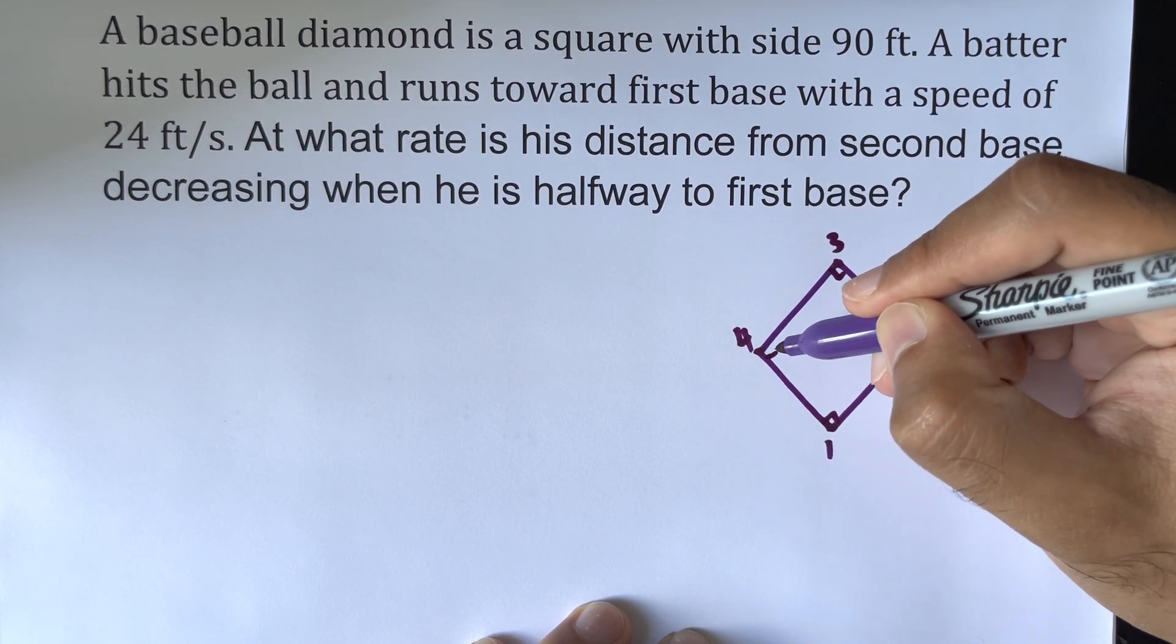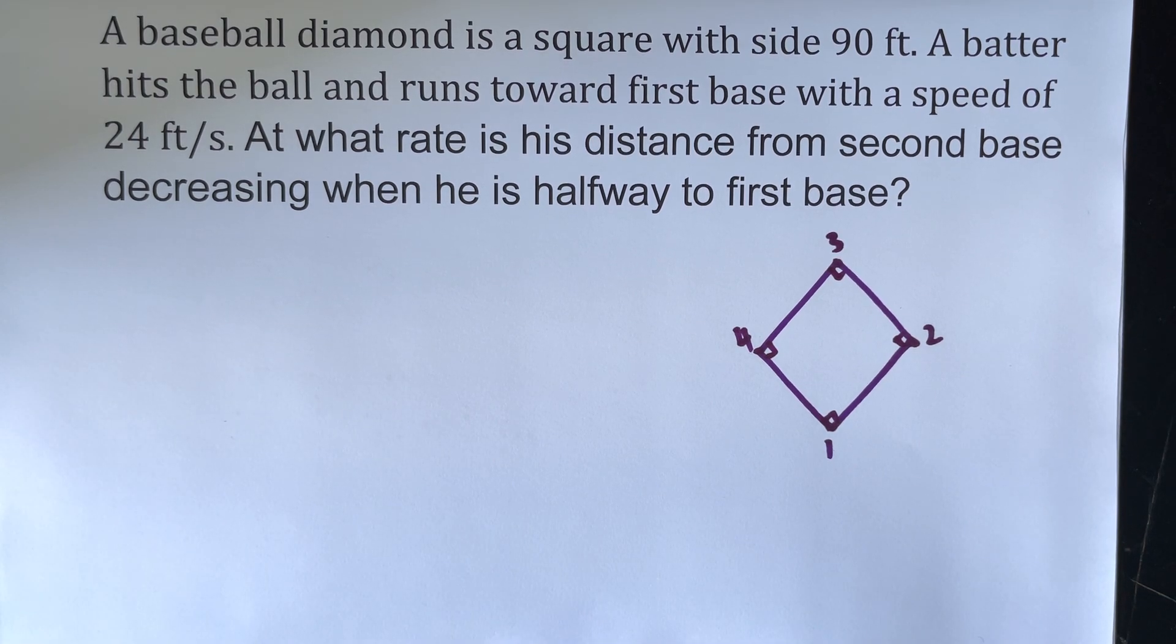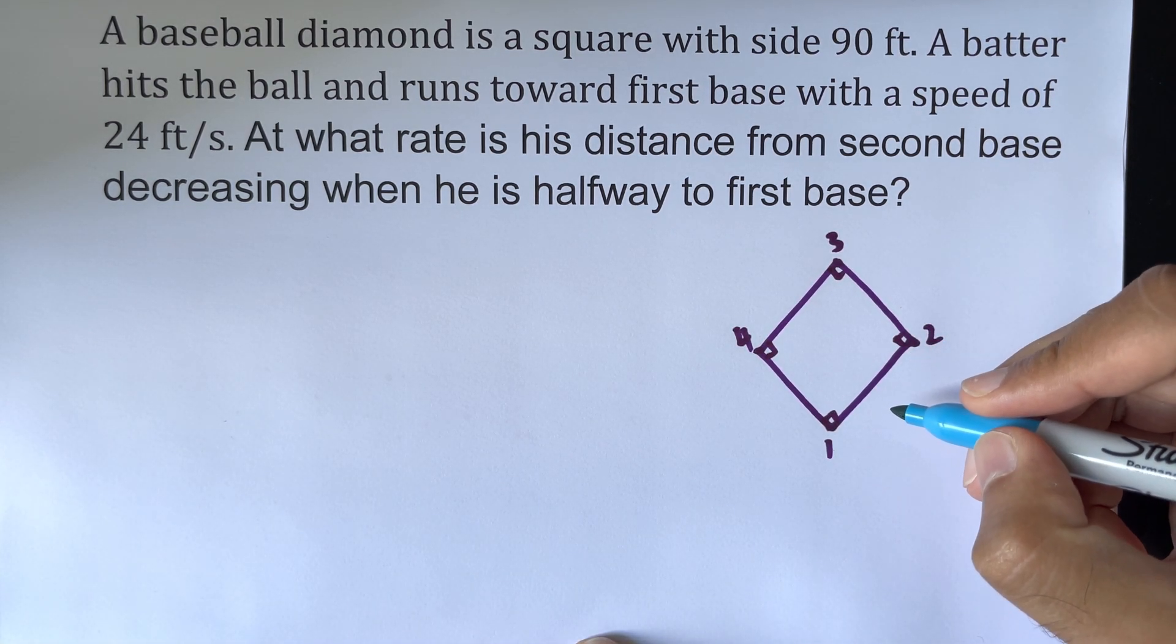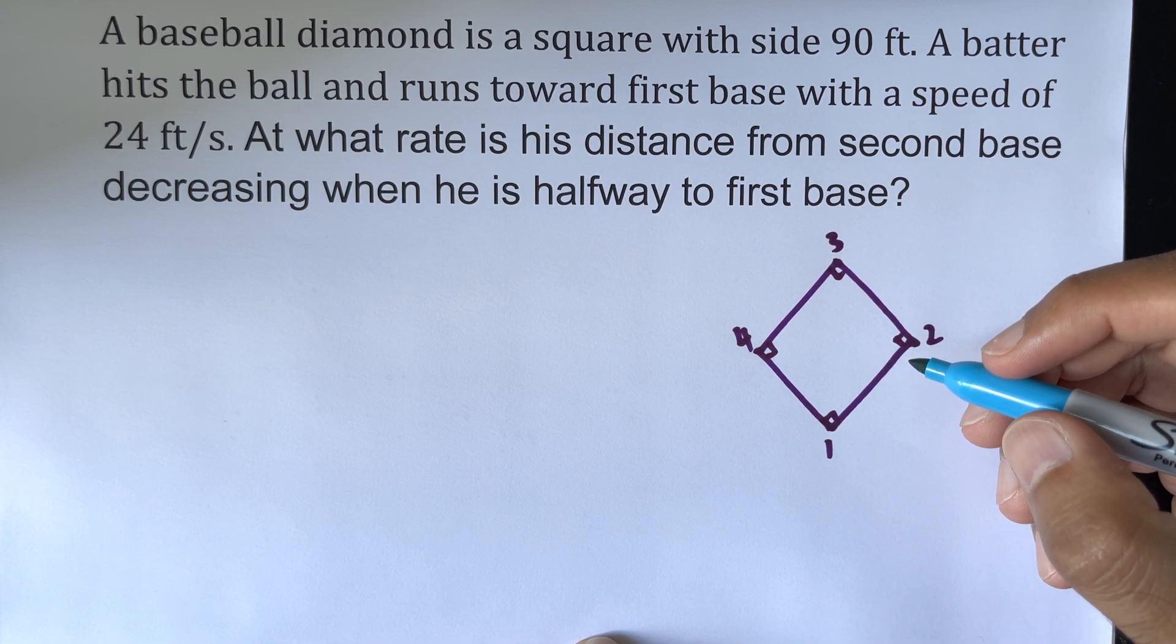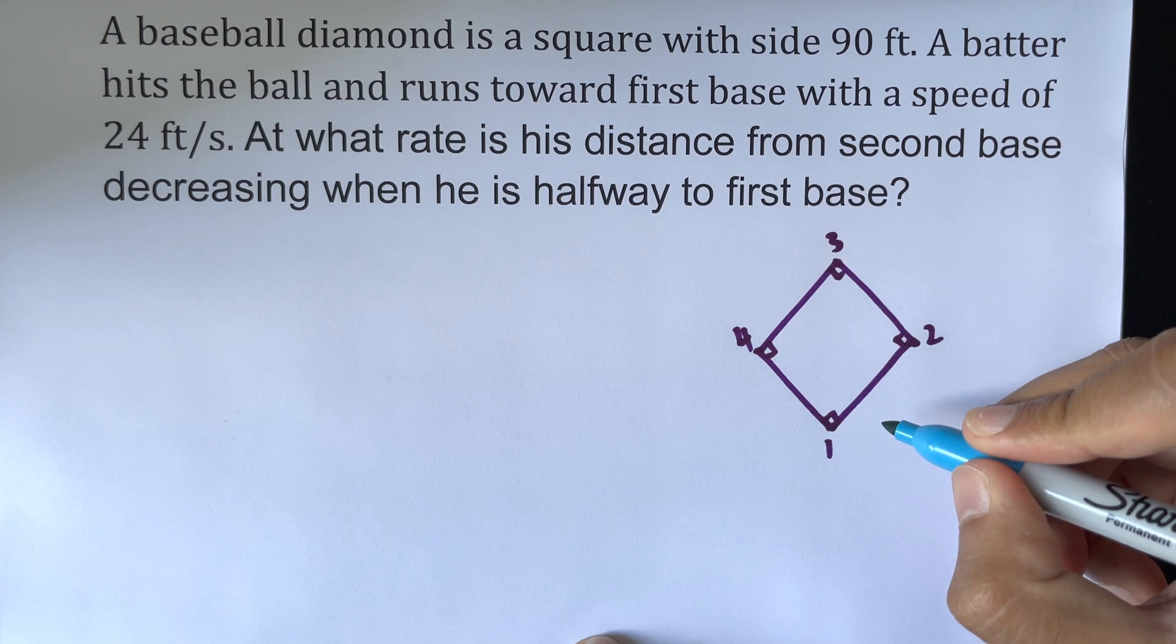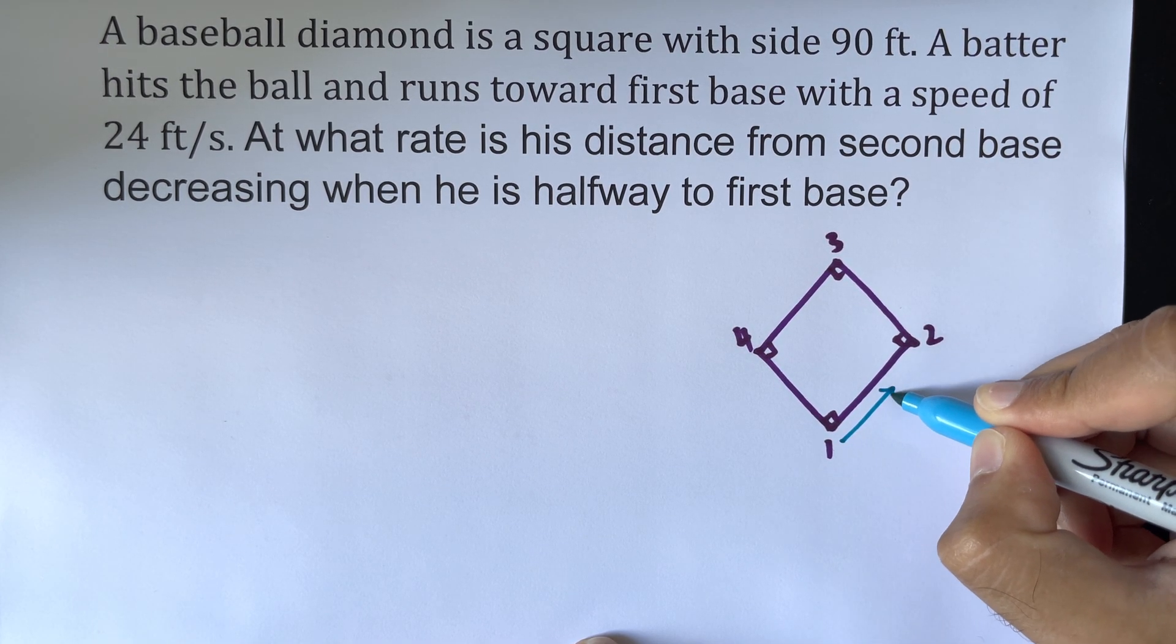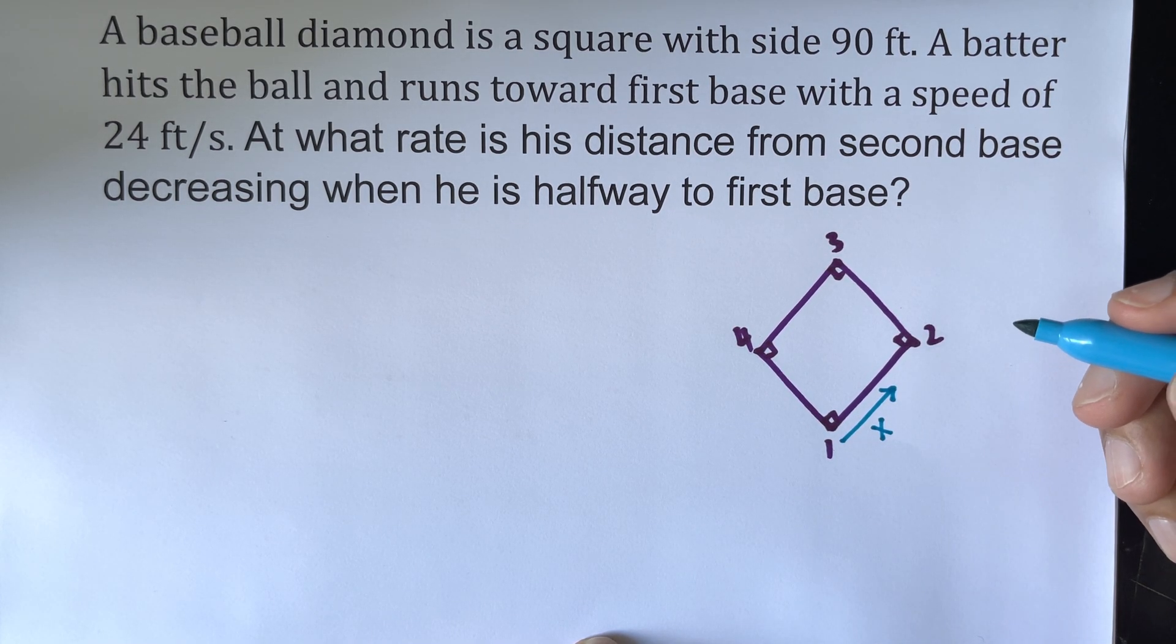Now, this is a pretty common question you get in related rates, and we let x equal the distance the batter has run at time t, so we know this distance to be x.